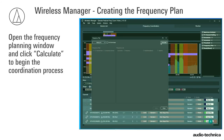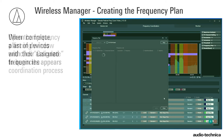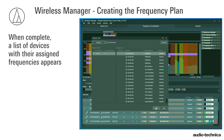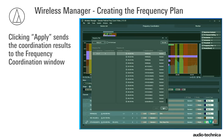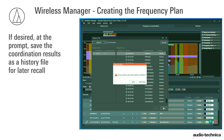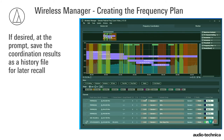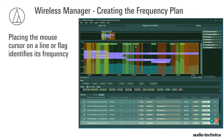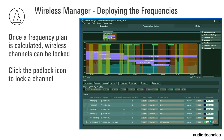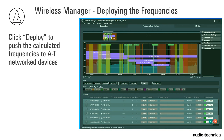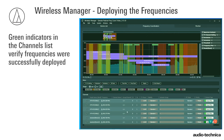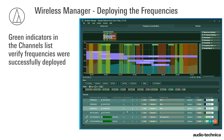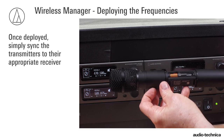Open the frequency planning window and click Calculate to begin the coordination process. When complete, a list of devices with their assigned frequencies appears. Clicking Apply sends the coordination results to the frequency coordination window. If desired, at the prompt, save the coordination results as a history file for later recall. Coordinated frequencies appear as green lines in the graph display, with flags identifying their respective channel name. Placing the mouse cursor on a line or flag identifies its frequency. Once a frequency plan is calculated, wireless channels can be locked — click the padlock icon to lock a channel. Click Deploy to push the calculated frequencies to connected AT devices. Green indicators in the Channels list verify frequencies were successfully deployed. Once deployed, simply sync the transmitters to their appropriate receiver.